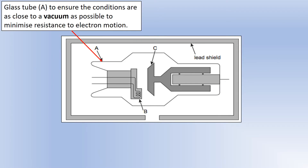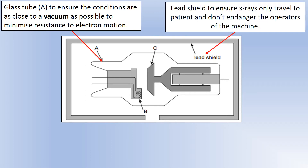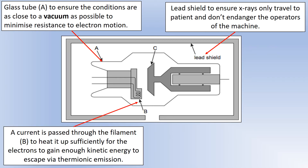The first part, labeled A, is a glass tube which creates a vacuum between the filament or cathode labeled B and the target or anode labeled C. We want this vacuum because we don't want the electrons we're producing to be impeded by gas atoms. The lead shield — the gray barrier visible all around with only one hole — ensures x-rays only travel in one direction, minimizing radiation risks to users and operators.